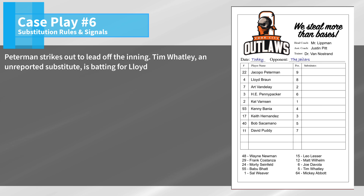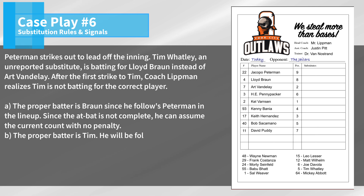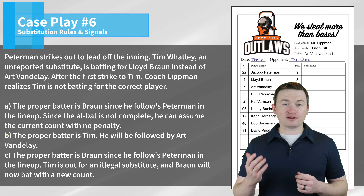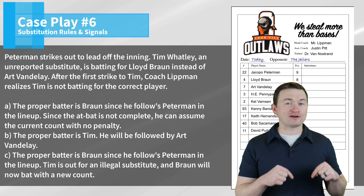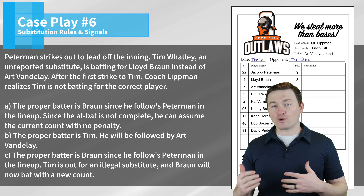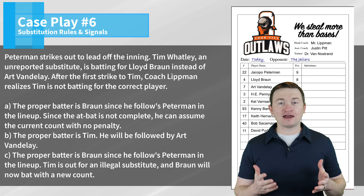Case play number six: Peterman strikes out to lead off the inning. Tim Watley, an unreported substitute, is batting for Lloyd Braun instead of Art Vandele. After the first strike to Tim, Coach Lipman realizes Tim is not batting for the correct player. The correct answer is B — the proper batter is Tim. He will be followed by Art Vandele. As soon as Tim stepped into the batter's box and the pitcher was on the rubber with the ball in play, he becomes an unreported substitution. It's not batting out of order — that's just where he's going to bat now and he's the official substitute. There's nothing the coach can do to move the batting order around.